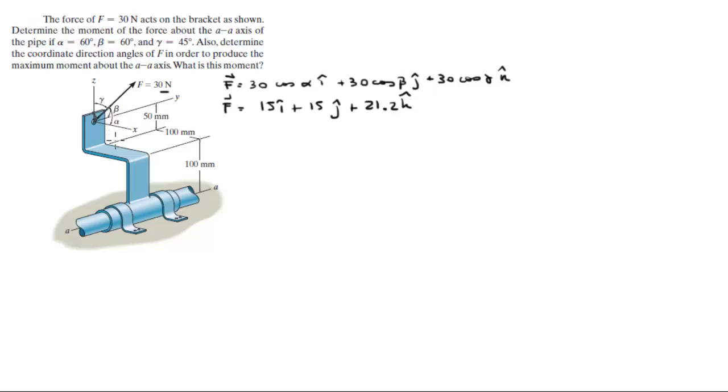Now you want to find the moment that it creates about the AA axis. Notice this pipe, thanks to these bands right here, can only turn this way. It can't turn this way; that it cannot do.